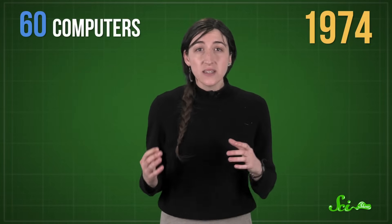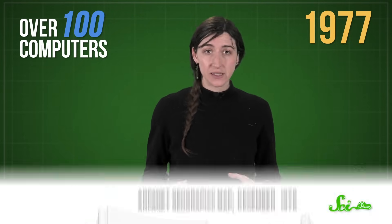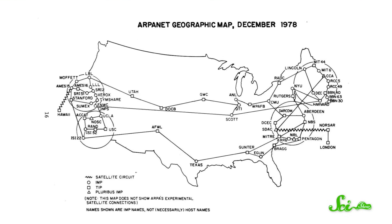This quick fix let ARPANET keep growing through the 70s, with 60 computers in 1974 and over 100 by 1977. Soon, satellites connected California and Hawaii, stretching ARPANET to what had been one of the most isolated places in the world. Then ARPANET jumped across the pond, extending the network to England and Norway. But by the mid-70s, ARPANET wasn't the only network in town.